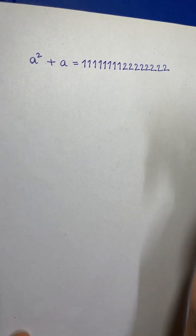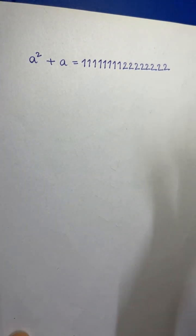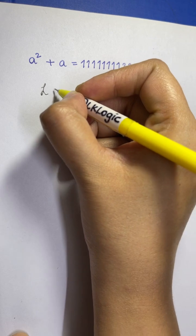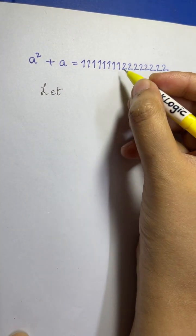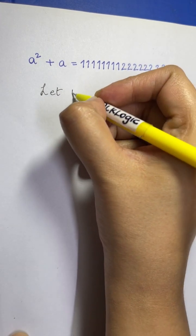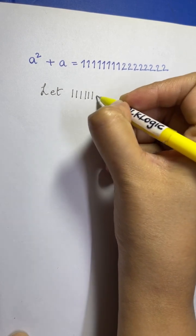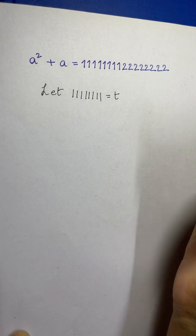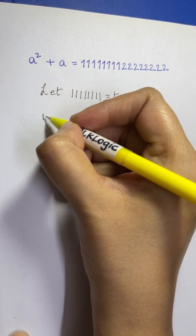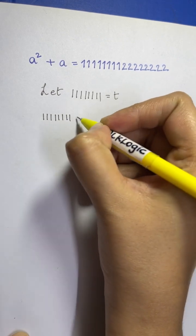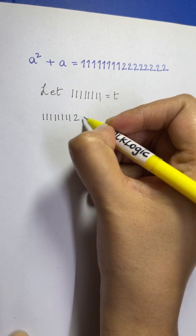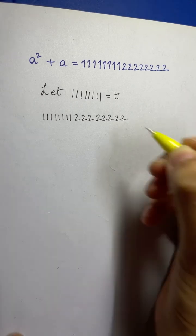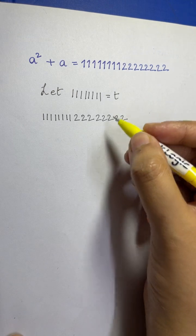So how should we solve this particular equation? What we can do is substitute. Let 11111111 — that is, eight ones — equal to t. So I'm going to write that: eight times one is equal to t. And we also have eight twos on the right-hand side.